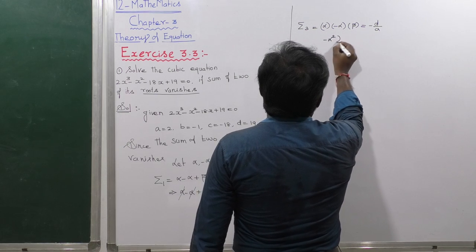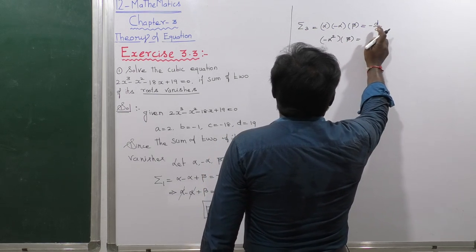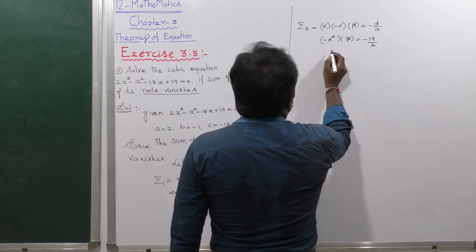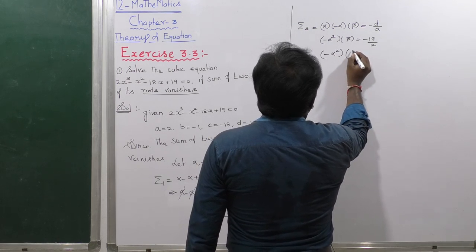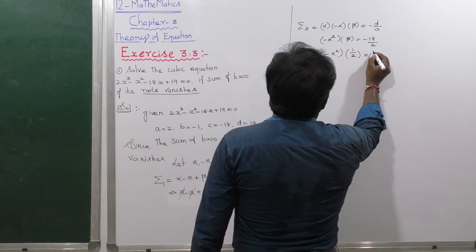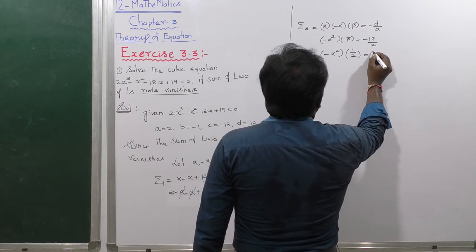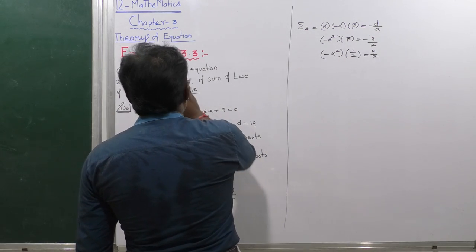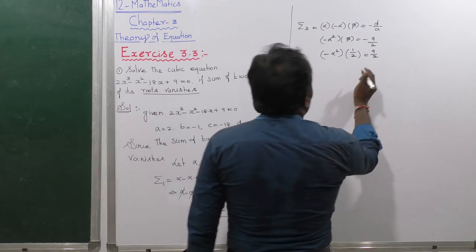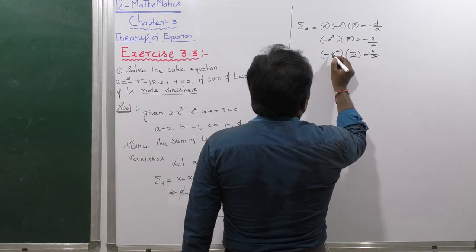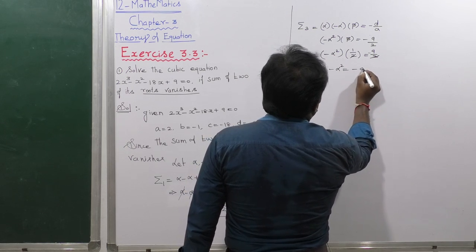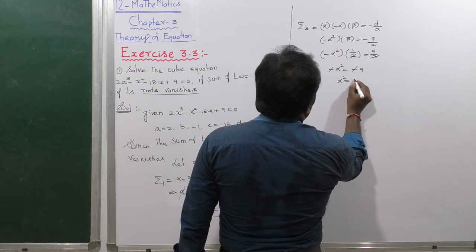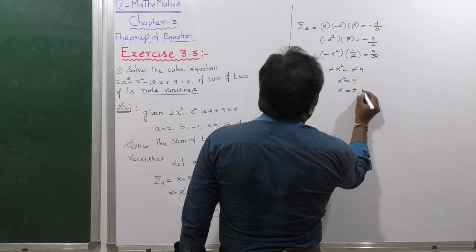So: -alpha² × beta = -d/a = -19/2. Substituting beta = 1/2: -alpha² × (1/2) = -19/2. This simplifies to -alpha²/2 = -19/2. The 2s cancel, giving -alpha² = -9, so alpha² = 9, and therefore alpha = ±3.